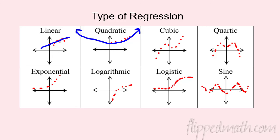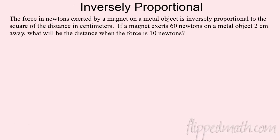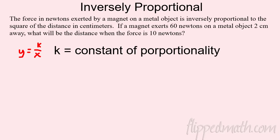Now let's talk about another type of word problem in this section: inversely proportional. These can look kind of crazy but they're actually pretty chill. The formula is y = k/x, where k is the constant of proportionality. As soon as you see 'inversely proportional,' write that formula. Even if you don't know the science, just follow the wording and set it up with letters, then plug stuff in.